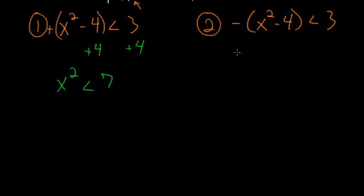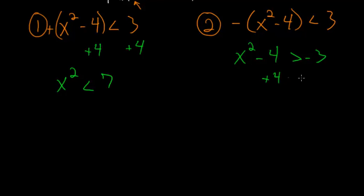In Case 2, we multiply each side by negative 1, so that we have x squared minus 4 is greater than negative 3. Since multiplying by a negative number flips the inequality sign, we can then add 4 to each side so that we have x squared is greater than 1.